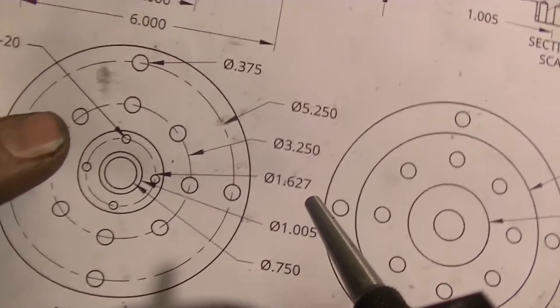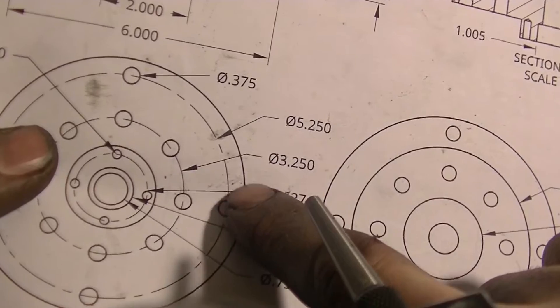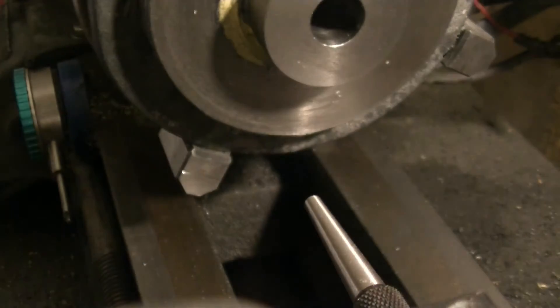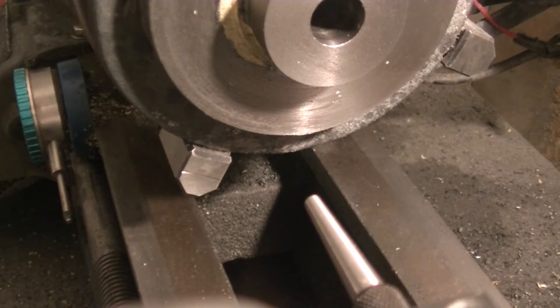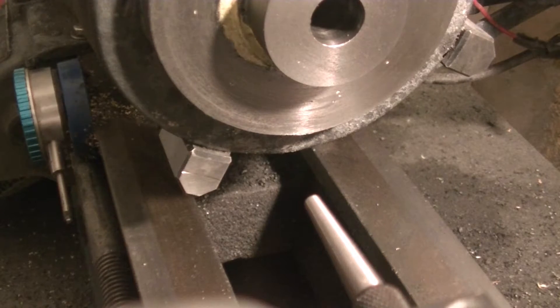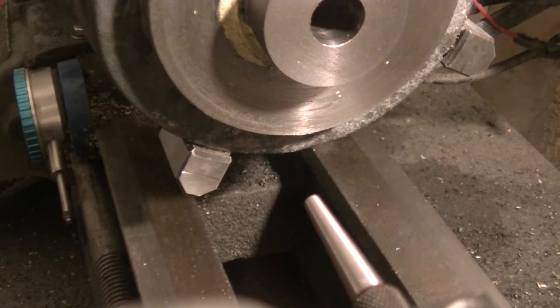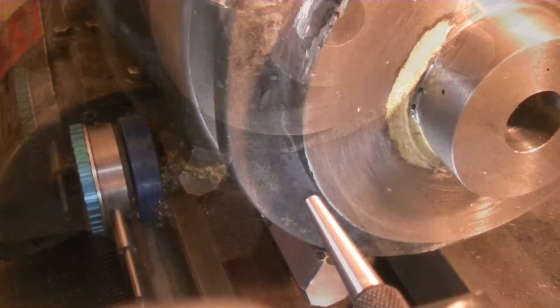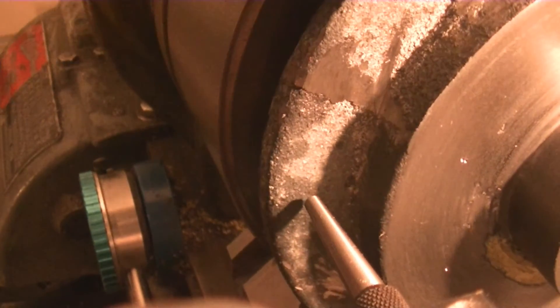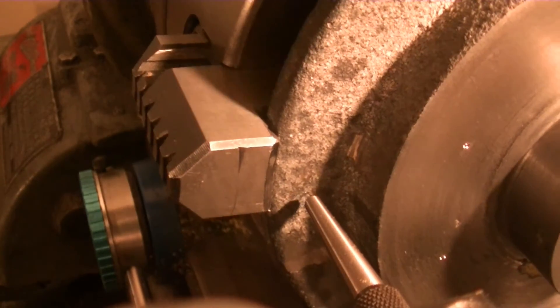So, if you look at the drawing, this outer bolt hole circle is 5 and a quarter inches. So, we have 5.250 and we need to divide that by 2. And that gives us the distance from the center to the outside bolt hole circle. But now we need to subtract the distance we already went to get to this bolt hole pattern, which is 1.65. We need to move over 1 inch. So, that's what we're going to do. That looks about right.